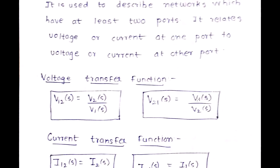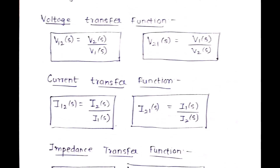V21(s) = V1(s) / V2(s), since output is the second port and input is the first port. The current transfer function I12(s) = I2(s) / I1(s), where I2(s) is the output current at port 2 and I1(s) is the input current at port 1. Transfer function is always output upon input. Similarly, I21(s) = I1(s) / I2(s).